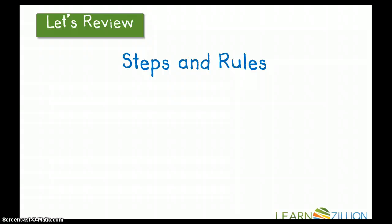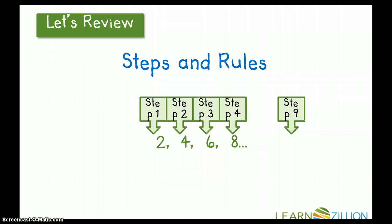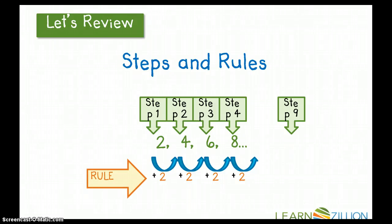Let's review. Steps and rules. We have these numbers here in our sequence: 2, 4, 6, and 8. The 2 is my step 1, the 4 is step 2, the 6 is step 3, the 8 is step 4, and so on. My rule is what happens to those numbers as they go through the steps. So in this case, my rule is plus 2. 2 plus 2 is 4, 4 plus 2 is 6, 6 plus 2 is 8, and so on.